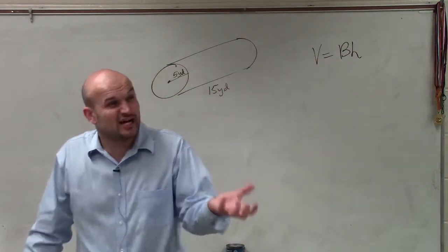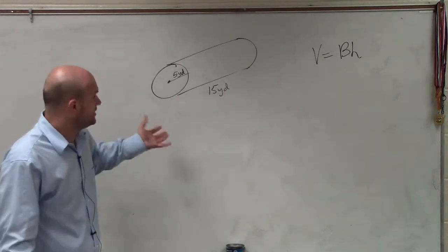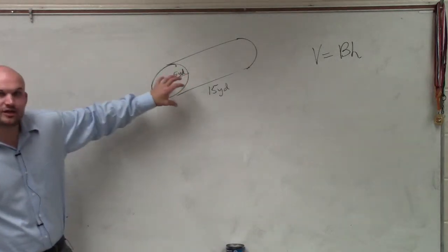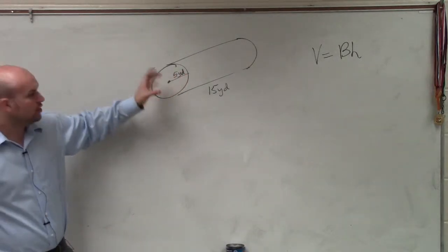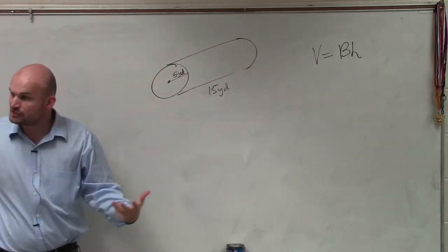So we need to find the area of our base. And again, we take a look at this. We need to look at that lateral surface area, which is going to be the circle. Now, we can find the area of a circle.